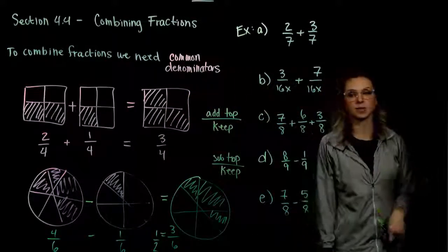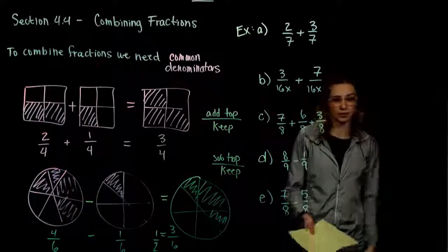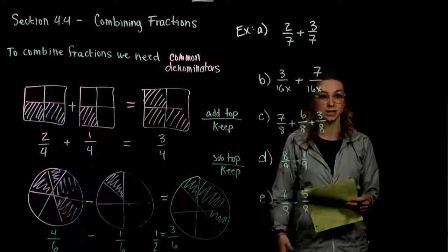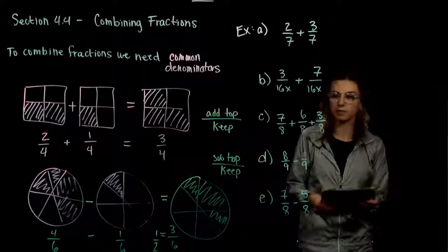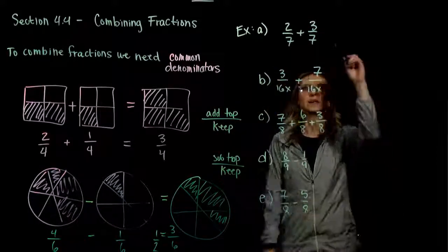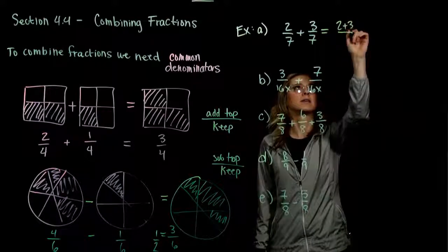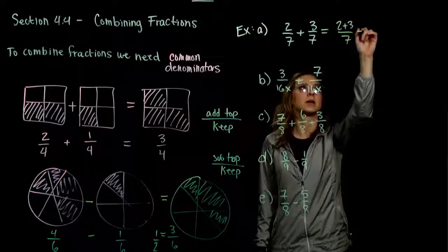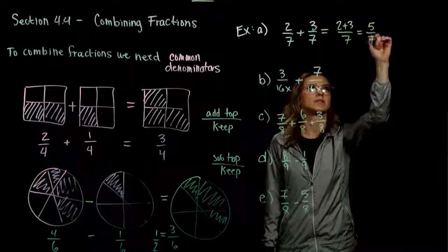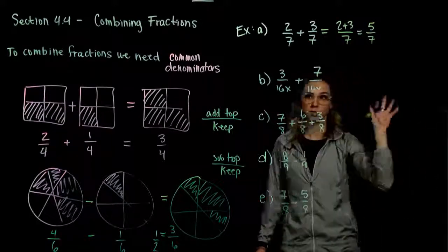In the first few examples, the denominators already match, so we just have to do the algebra across the top. In the first example, we've got two-sevenths and three-sevenths. Combining together, we just add across the top and keep the same denominator. We get five-sevenths in total. We can't reduce it, so we're done.